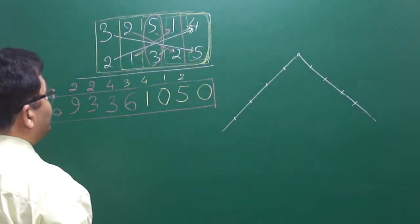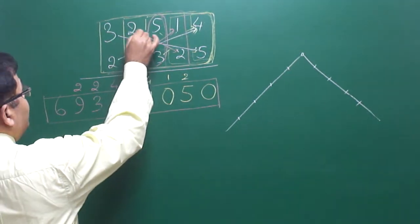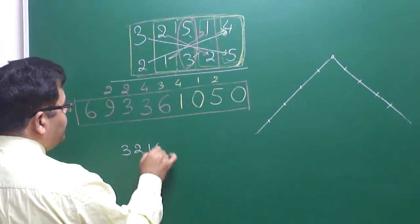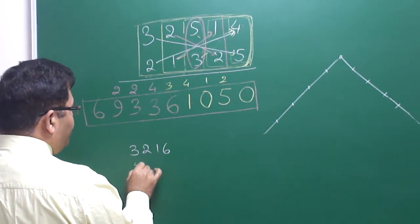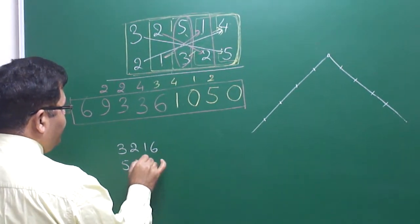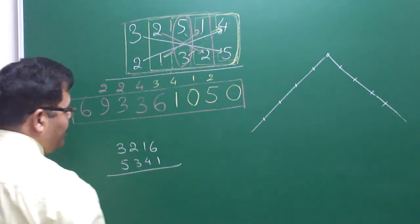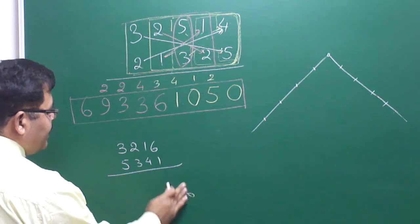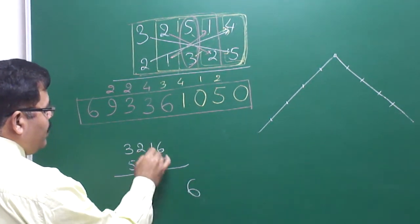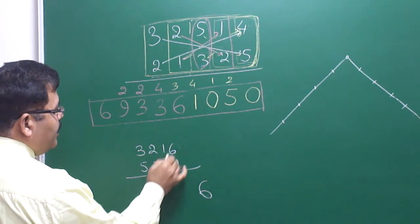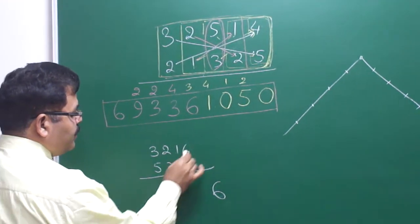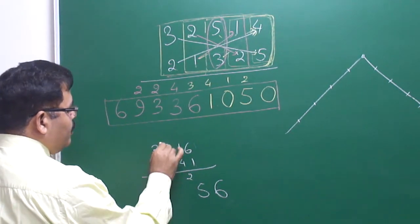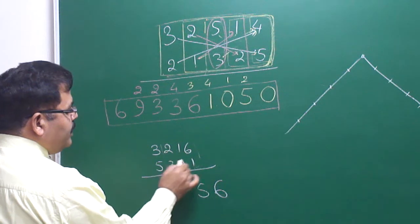If you are not able to get it, let me finish with one more example: 3216 multiplied by 5341. Taking one at a time: 6 × 1 = 6, write 6. Taking two at a time: 1 × 1 + 6 × 4 = 1 + 24 = 25, write 5, carry 2.